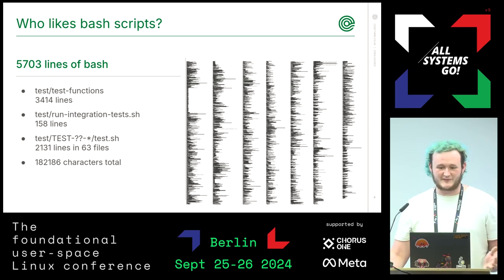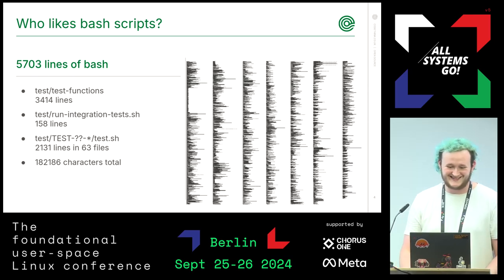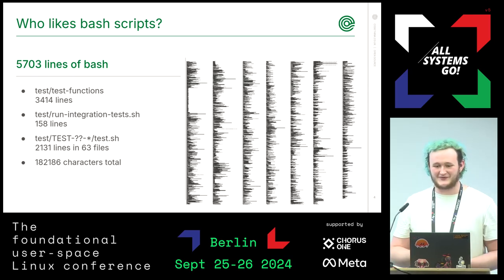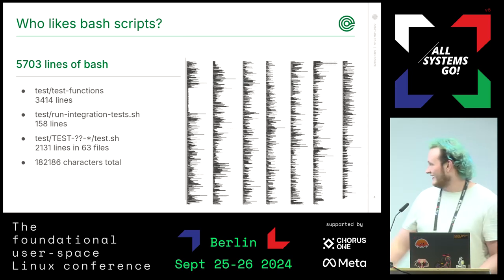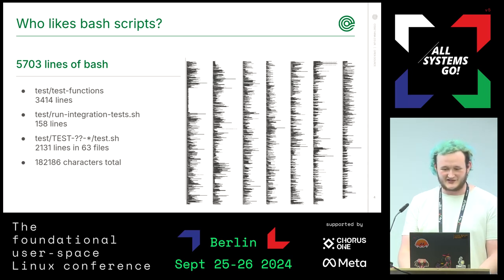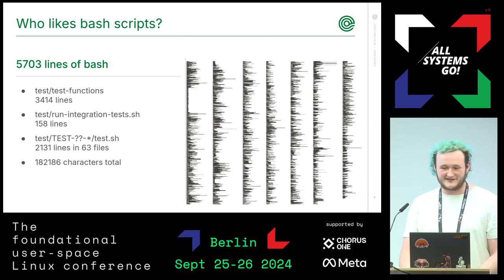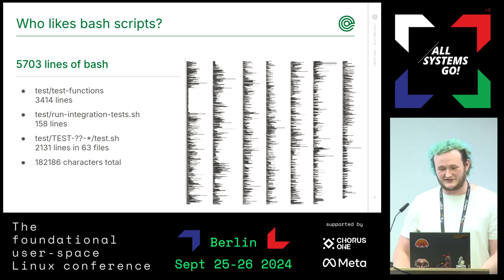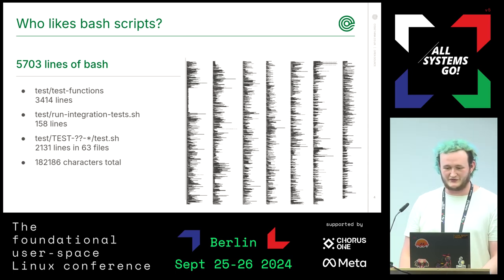Who likes Bash? To start with, I'm going to go over how the testing infrastructure worked at the start of the project. On the right-hand side, you can see test-functions and all of the test.sh files combined and scaled down to 5%. This is the Bash test runner, part of the integration testing suite. There are also 216 shell scripts involved in running the tests on the target, totaling 31,692 lines.